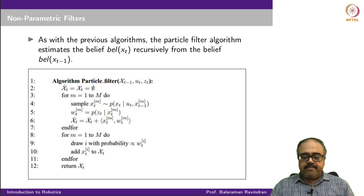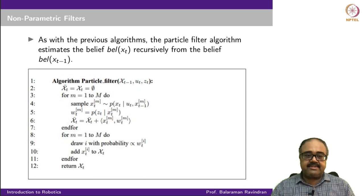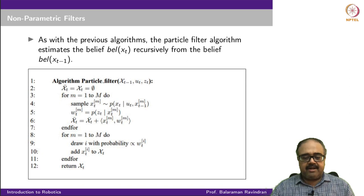We initialize two sets of particles: script X_t bar and script X_t. Script X_t bar will represent Bel_bar(x_t) and script X_t will represent Bel(x_t). Lines 3 to 7 run through each of the M particles once. In line 4, we take the previous particle x_{t-1}^m, apply action u_t, look at the distribution of the resulting state x_t, and sample x_t^m from that distribution.